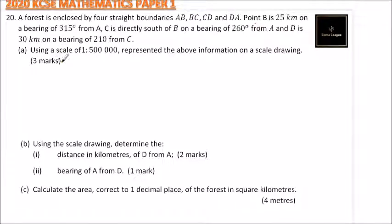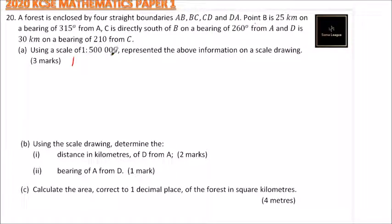Using the scale of 1 to 500,000, represent the information on a scale drawing — that's worth three marks. This scale means you divide by 100 then 1000, so 1 cm represents 5 km.